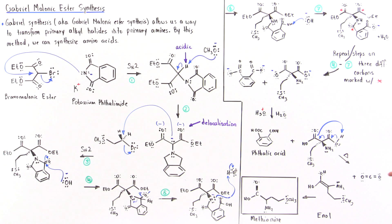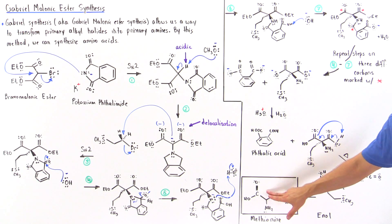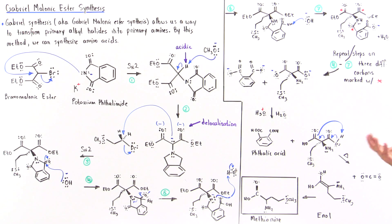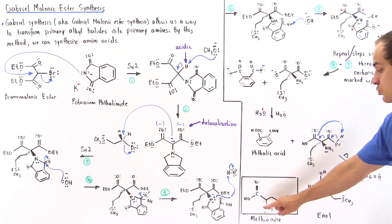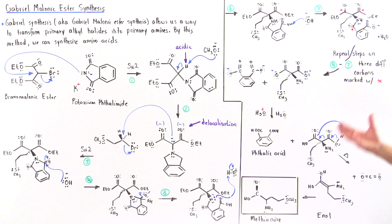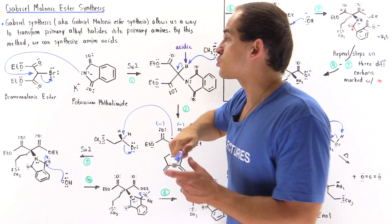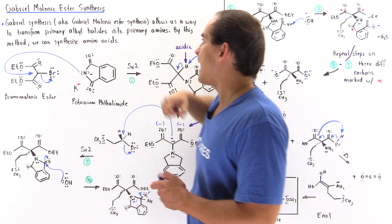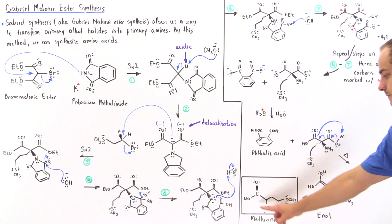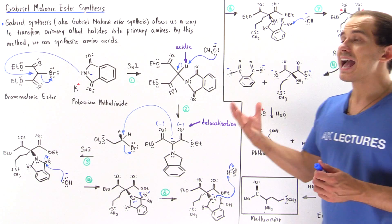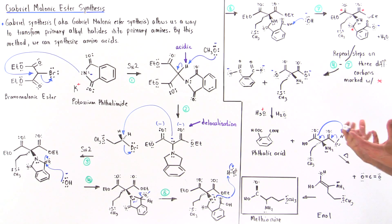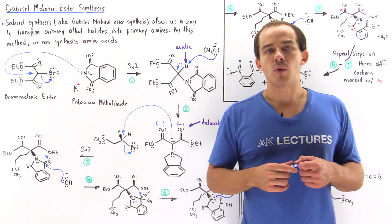In the final steps, we have the formation of the carboxylic acid. The enol under these conditions is transformed into the carboxylic acid, which is our amino acid — the alpha amino acid methionine. Notice this is also a primary amine because the nitrogen is attached to only one carbon-containing group, and that's exactly why the Gabriel synthesis transforms primary alkyl halides into primary amines. This is the reaction mechanism for the Gabriel-Malonic ester synthesis that allows us to synthesize our amino acids.